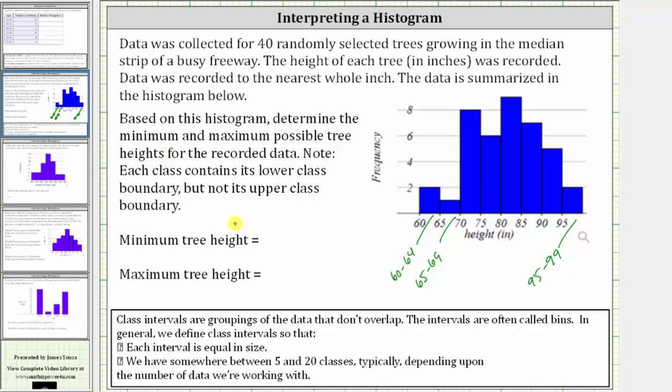And therefore the minimum possible tree height would be 60 inches. And the maximum possible tree height would be 99 inches.